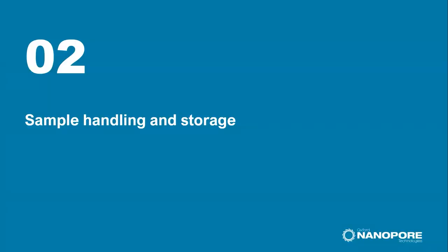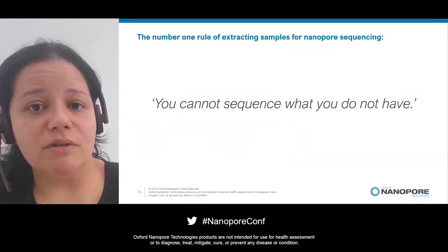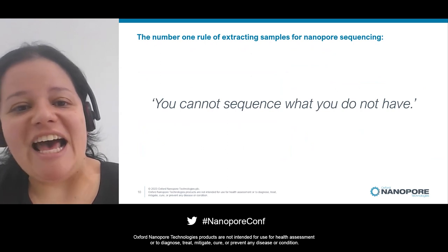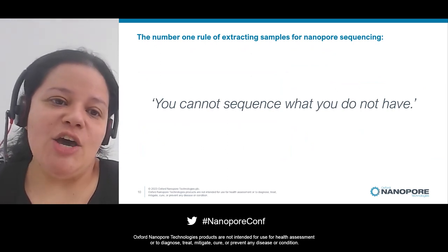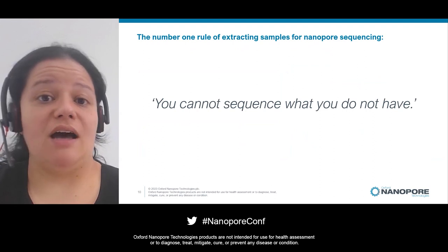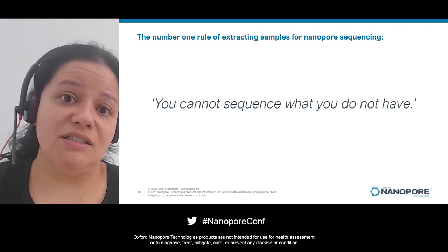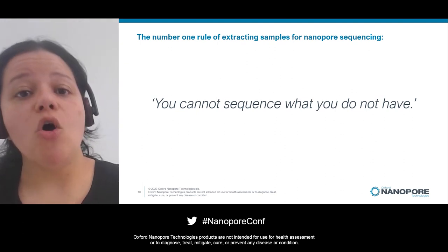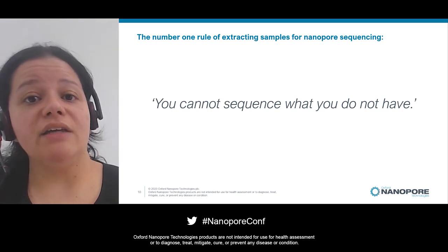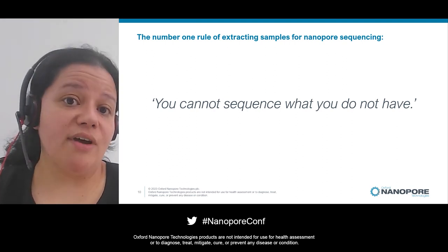Now let's talk about sample handling and storage. This is really important because you cannot sequence what you do not have — that is our number one rule. What you get out of the device is what you put in. If you want to sequence something really long, you need to ensure those long fragments are carried from the raw sample through extraction through library prep all the way to the sequencing device.